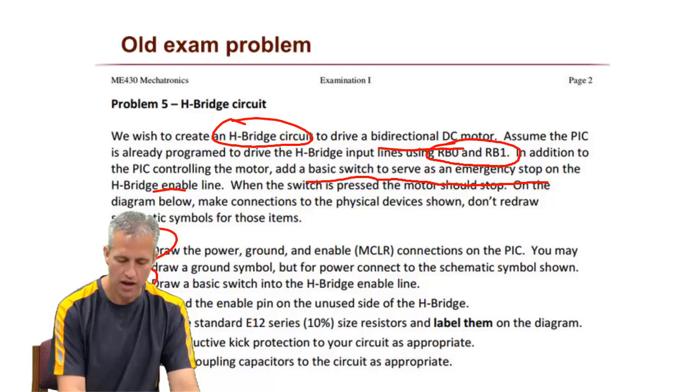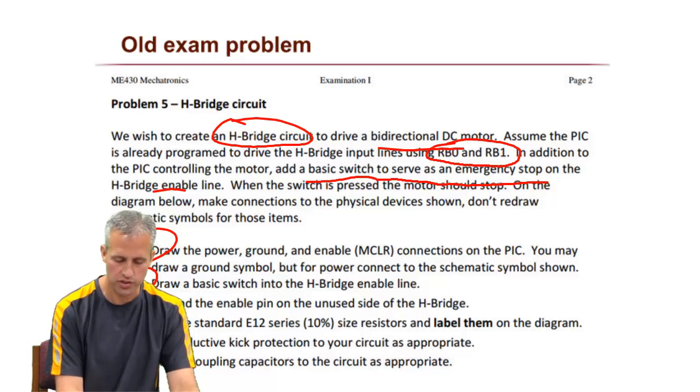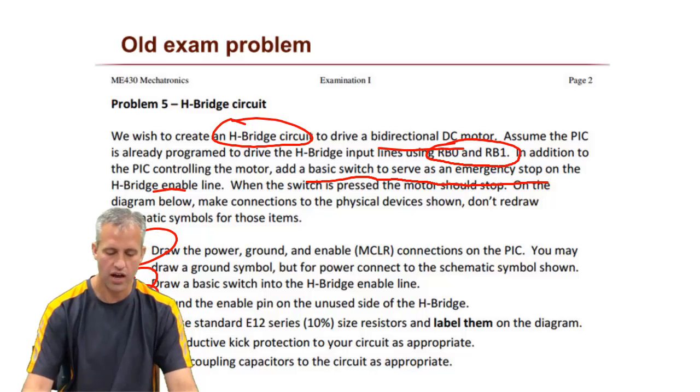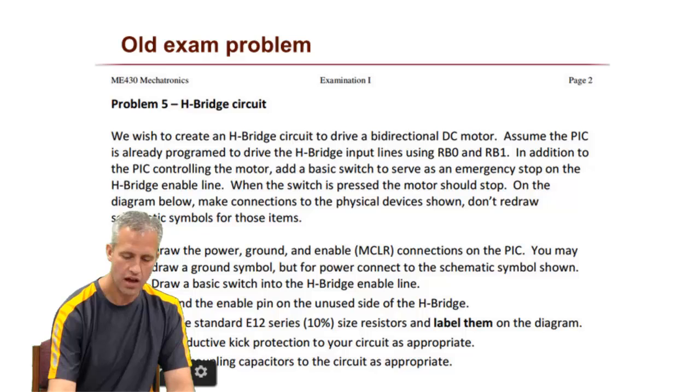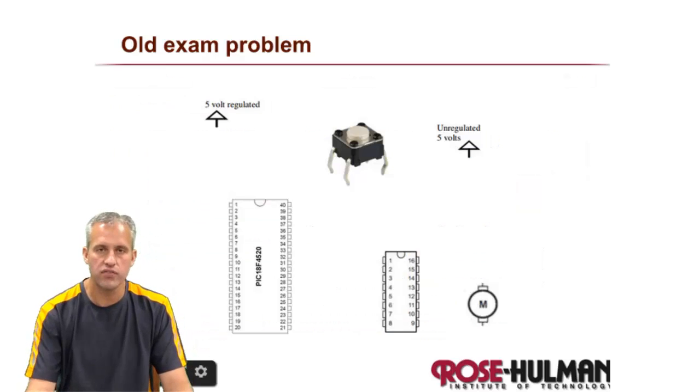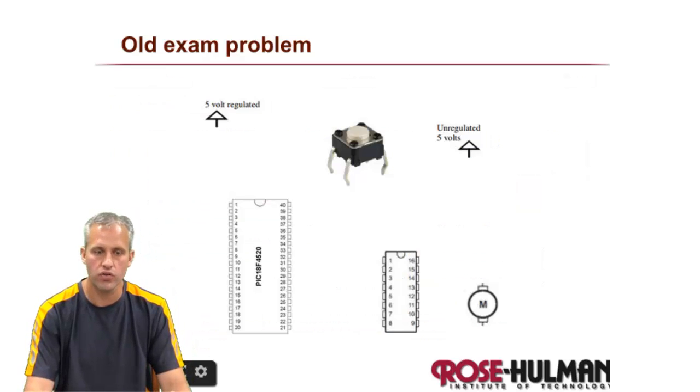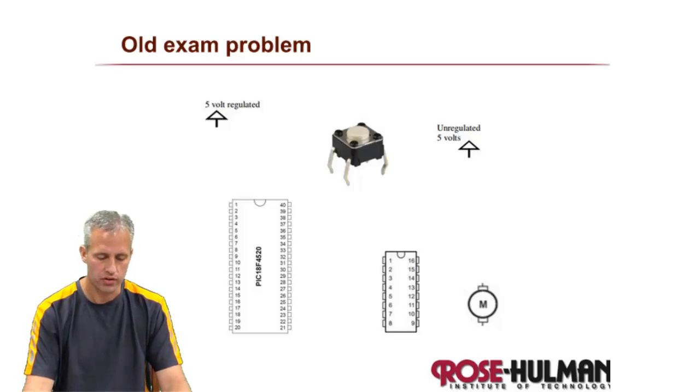Connect the PIC, connect the basic switch, connect the enable line to the basic switch. Make sure you use real resistors for any resistors you have and make sure you label them. Include the inductive kick protection, which means snubbers and decoupling capacitors. That's the problem, see if you can work it on this paper. I'm going to work it as well.